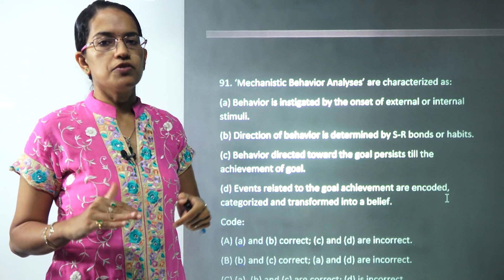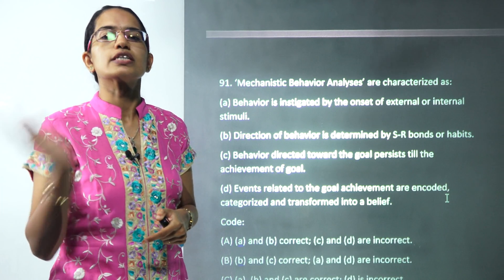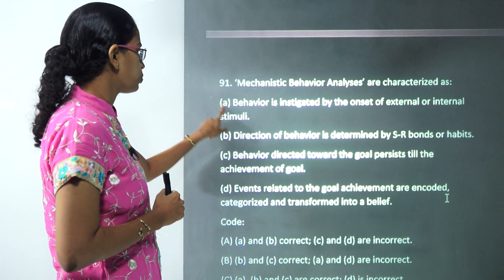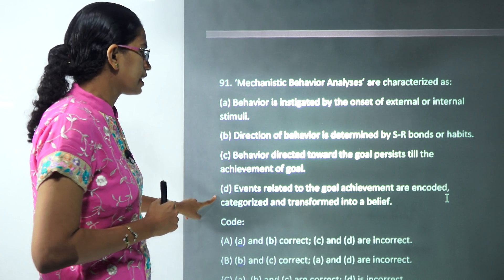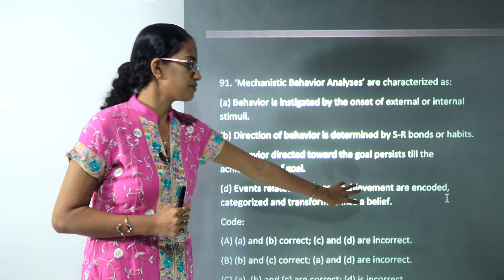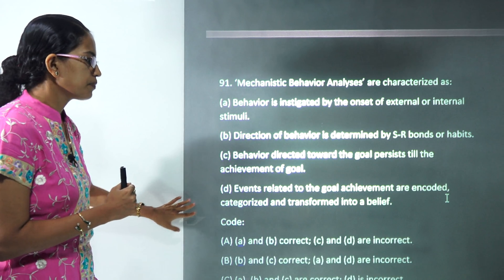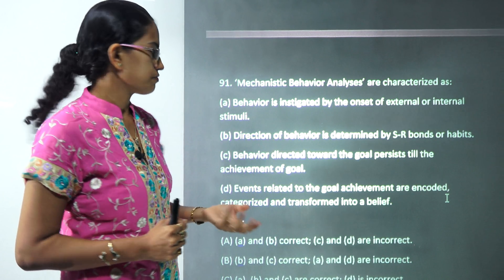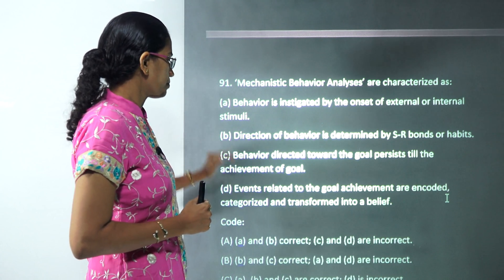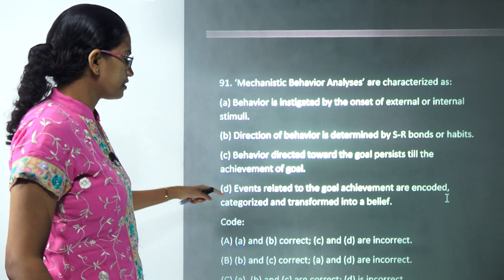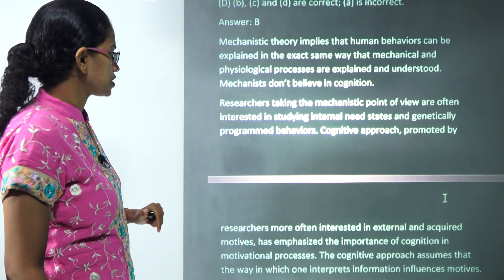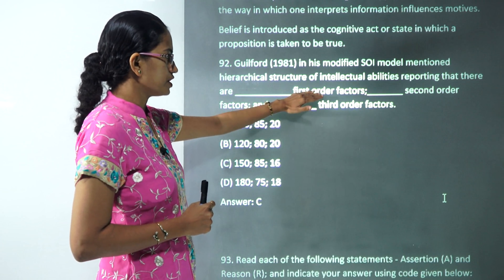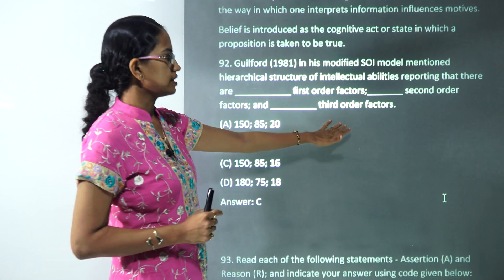The next question asks what characterizes mechanistic behavioral analysis. Mechanistic behavior involves internal stimuli, whereas the cognitive approach talks about external stimuli, making one option incorrect. Option D is also incorrect because transformation into belief is not part of the mechanistic view. So B and C are the correct options, while A and D are incorrect.